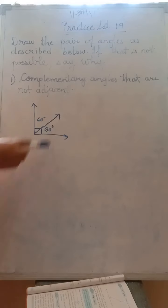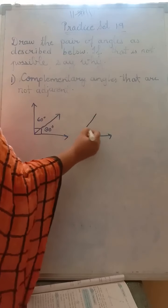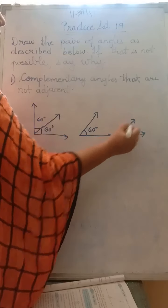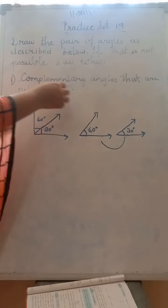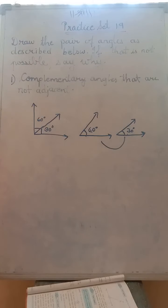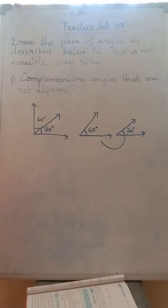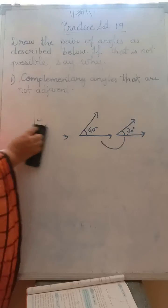And these can be drawn adjacent also — common arm, common vertex, separate interior. But can you draw complementary angles that are not adjacent? Suppose this is 60 degrees and this is 30 degrees drawn separately. Can you say these two are complementary? Yes, they are complementary because 60 plus 30 is 90. But are they adjacent now? No. So for this description, your diagram will be two separate angles that are complementary but not adjacent.